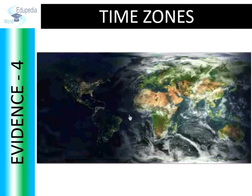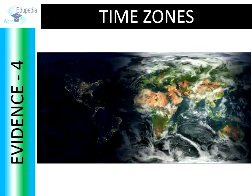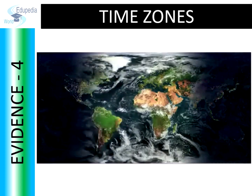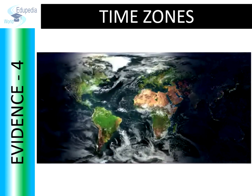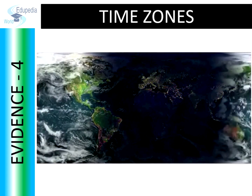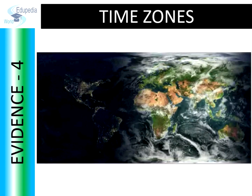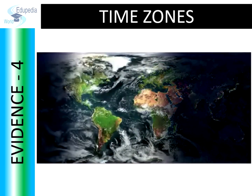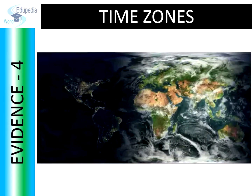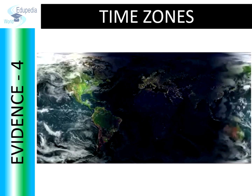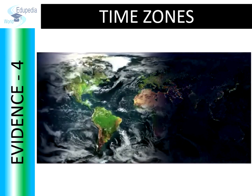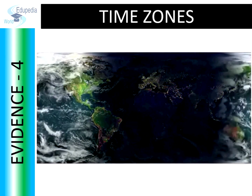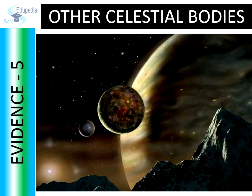Fourth evidence: We all have friends and relatives living in different parts of the world. While interacting with them we surely realize that the time is different at those places when compared with each other. We also know that the time of sunrise and sunset is not the same everywhere on the Earth. If the Earth was flat, then all the places on the Earth would have had the same time.